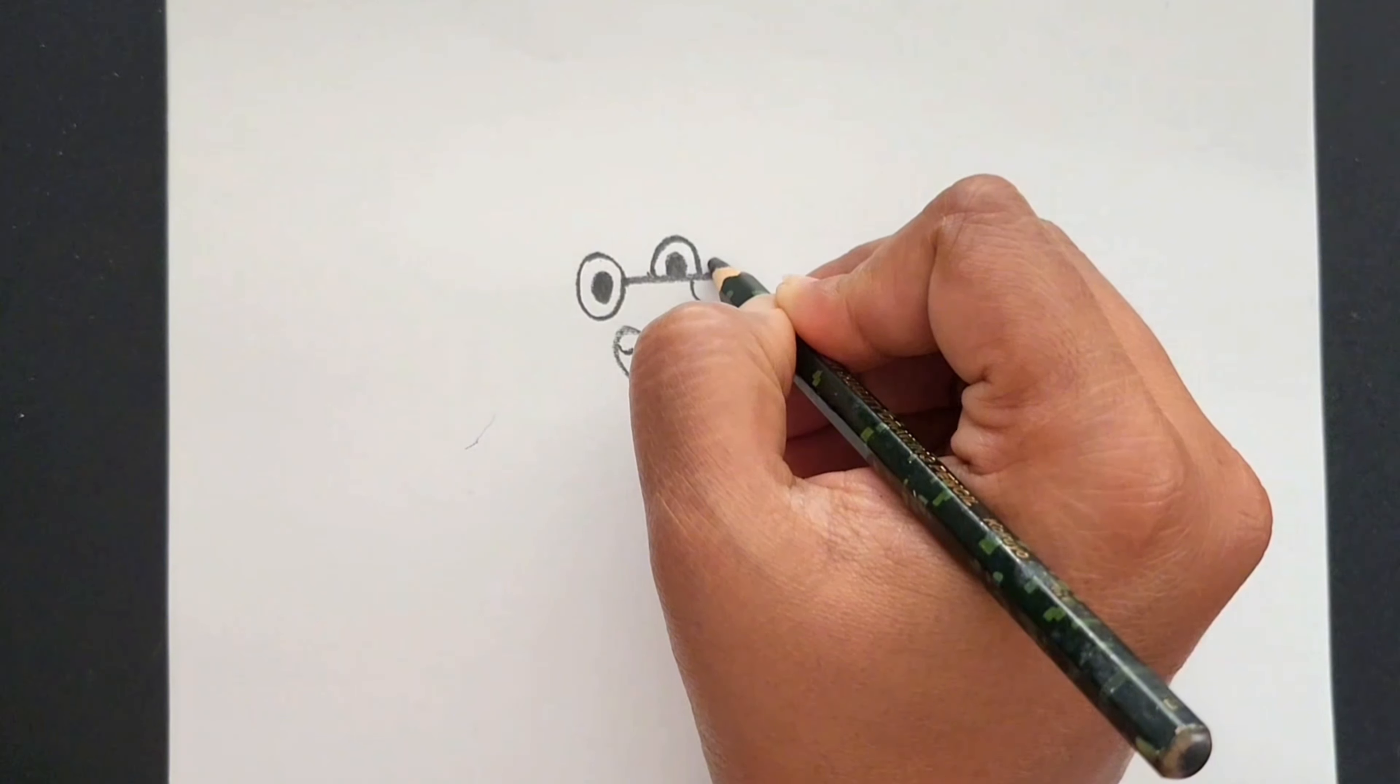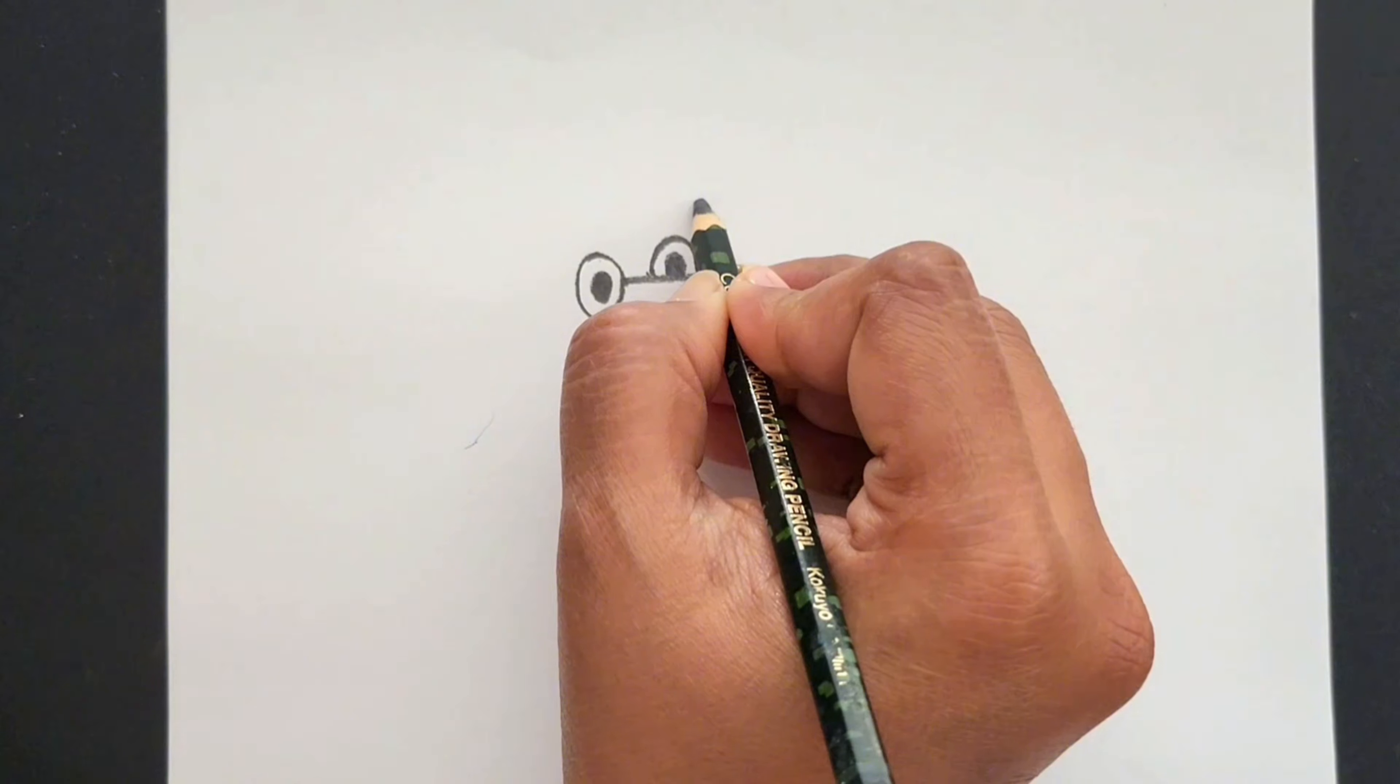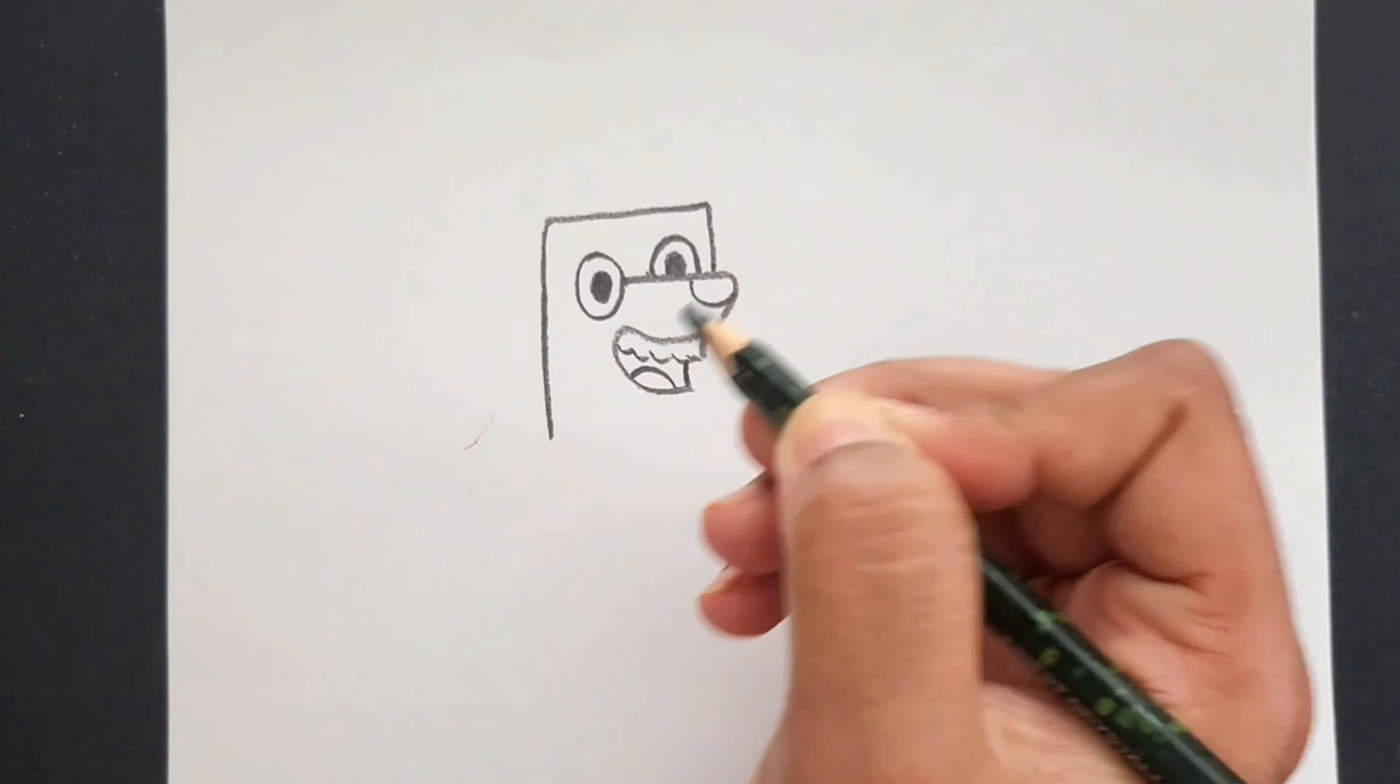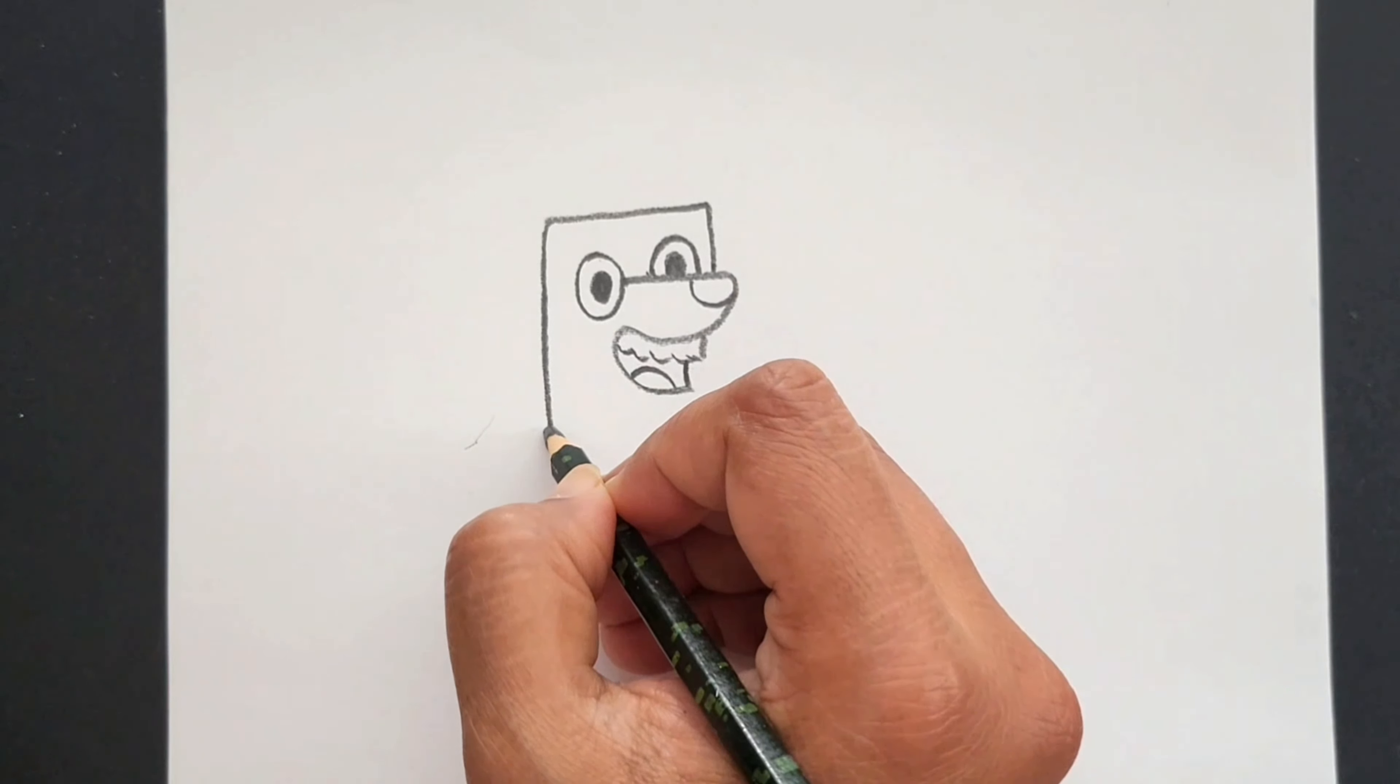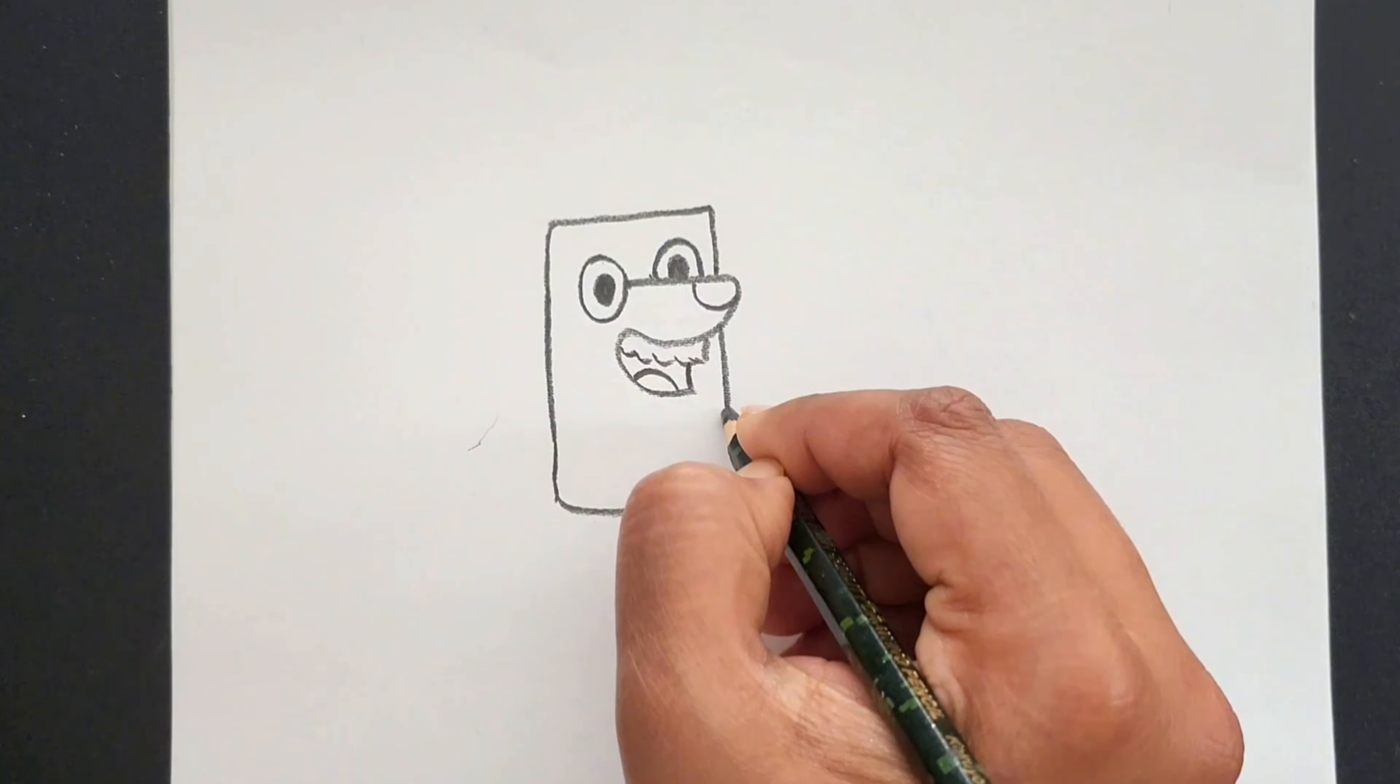Starting here, draw a line up. Draw another line for top of the head. Now draw side of the body. Now draw the bottom of the body and connect it to the nose.